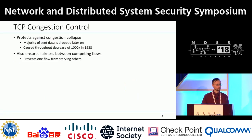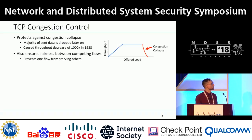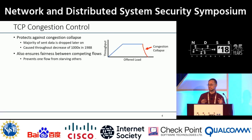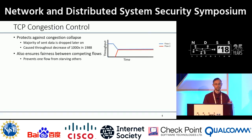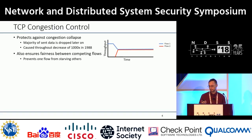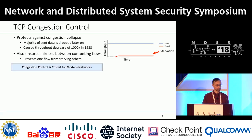So what is TCP congestion control? Its goal is to protect against congestion collapse, a situation where the majority of data sent in a network is eventually dropped. This actually occurred on the early Internet in 1988, prior to the introduction of TCP congestion control, resulting in a throughput drop of a factor of 1,000. Congestion control also helps ensure fairness between competing flows, so flows competing for available bandwidth share it fairly and one flow doesn't starve the others. In short, congestion control is crucial for the efficient operation of modern networks.